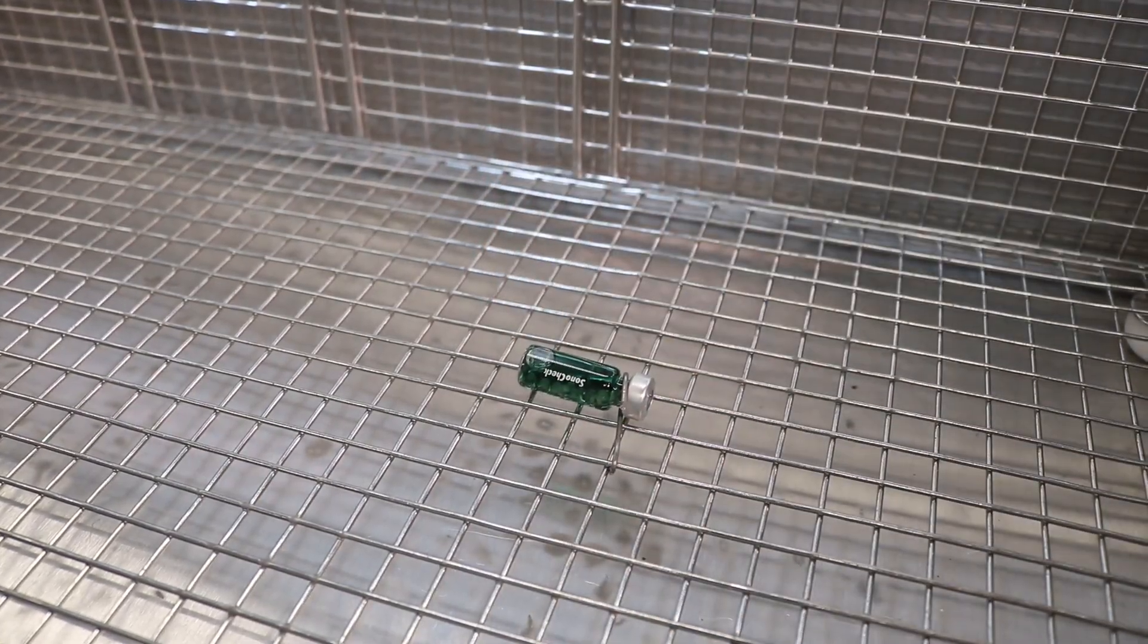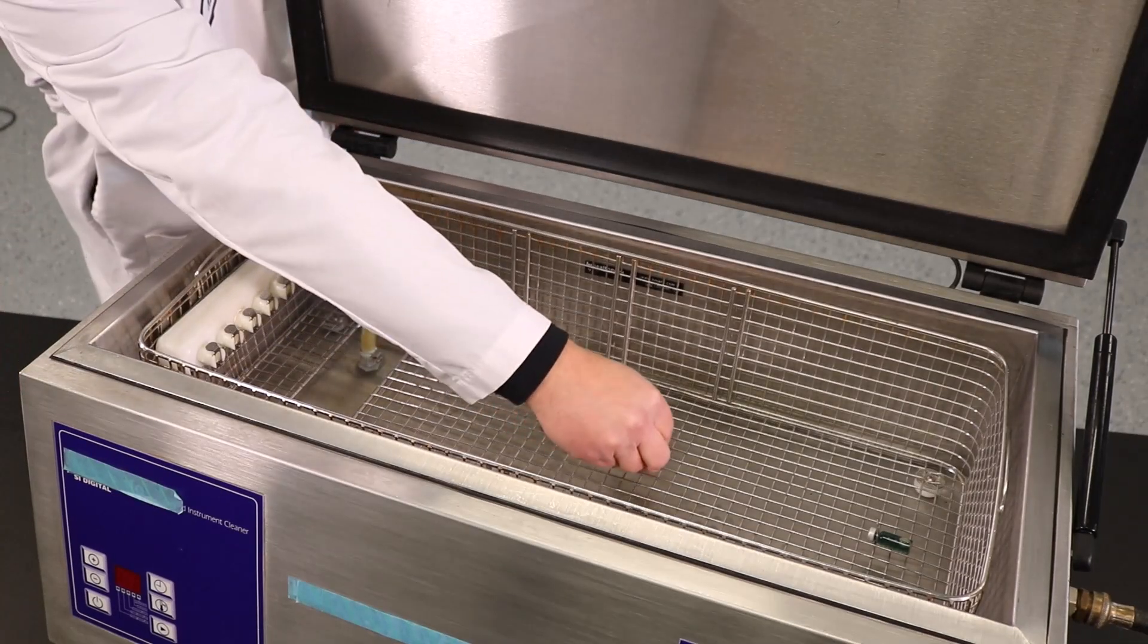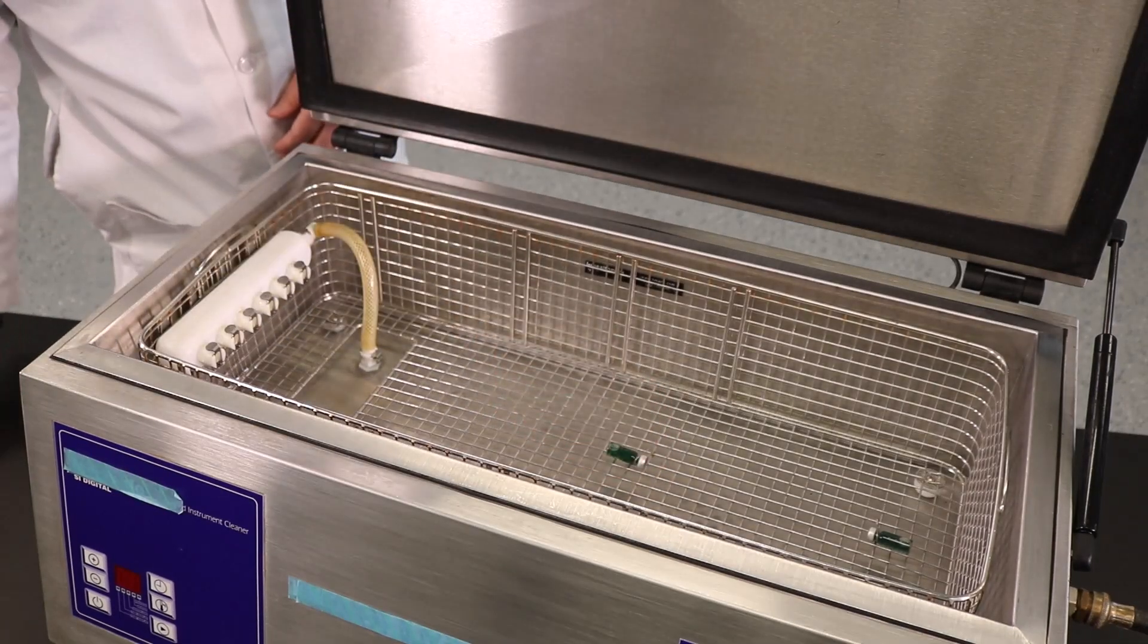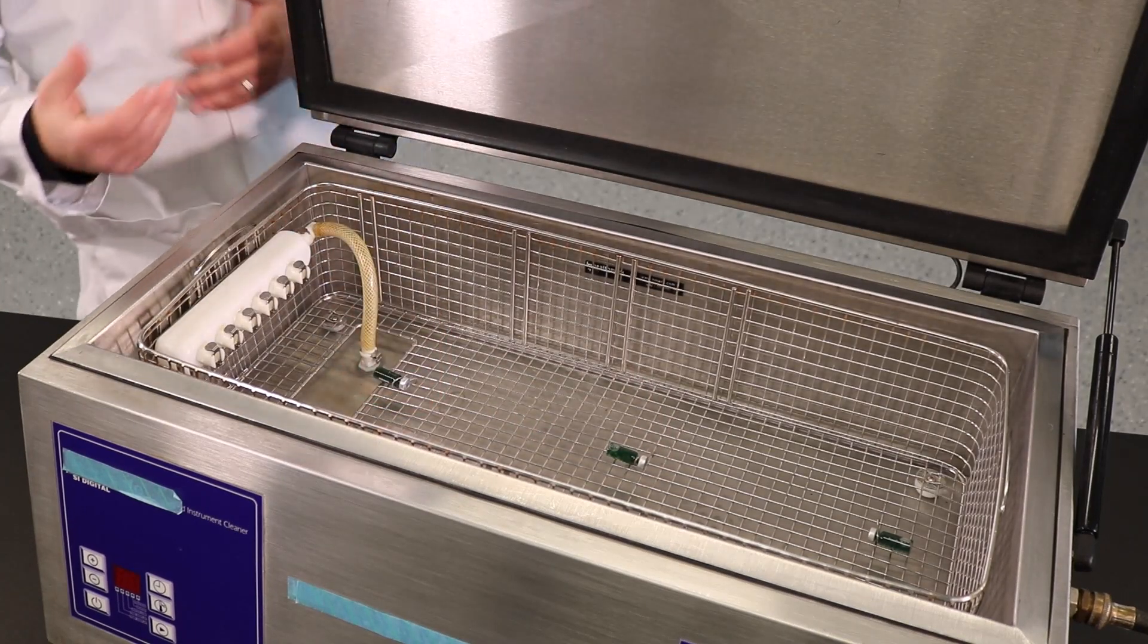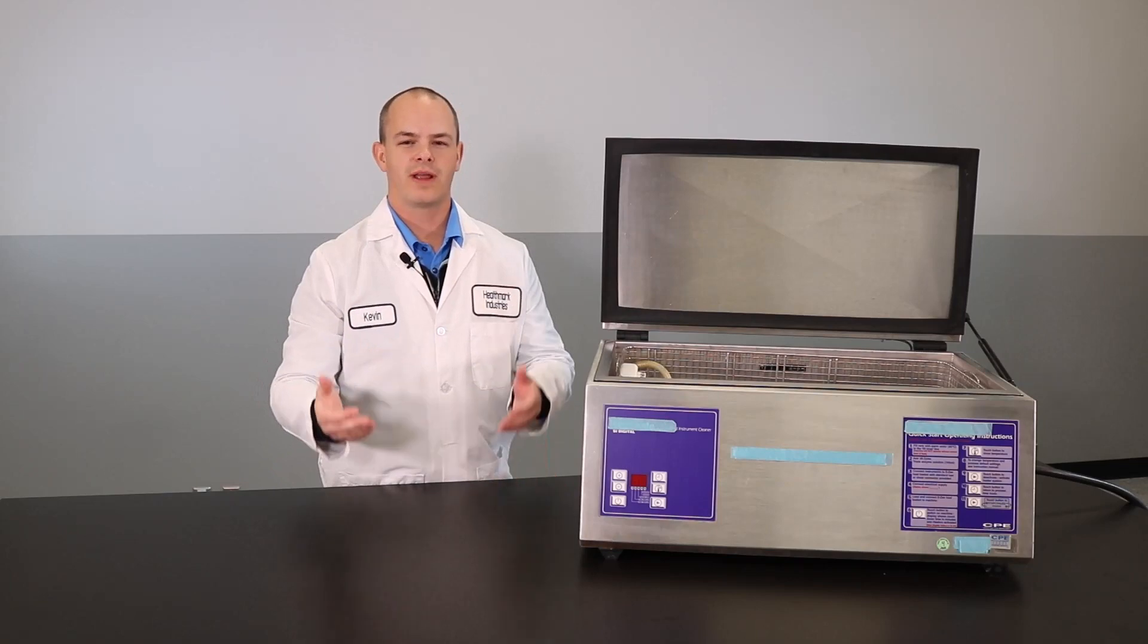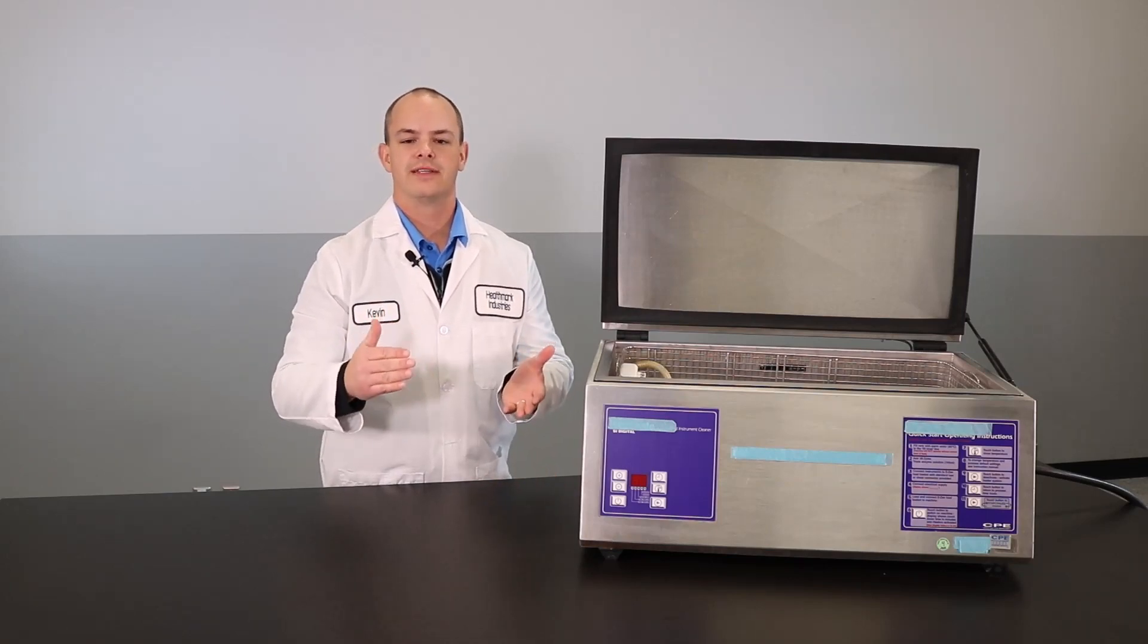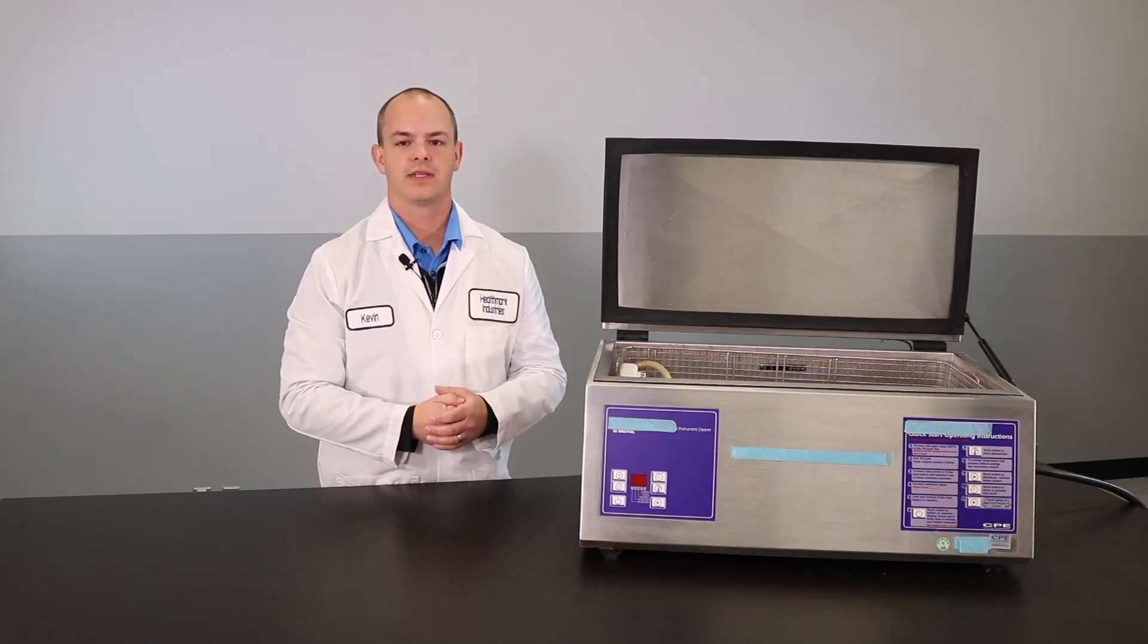One's going to go on the far side, one's going to go in the middle, and then the last one will go closest to me on the near side. And at that point, we're just going to test our normal test cycle, our normal instrument cycle, whatever the cycle is that's the shortest that you use for your instruments. That is the one that we recommend testing.